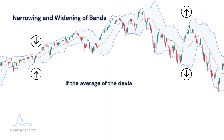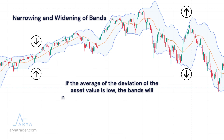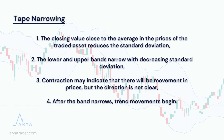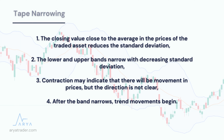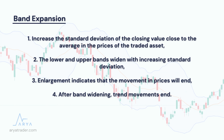Narrowing and widening of bands: The narrowing and widening of Bollinger Bands are shaped by the standard deviation. If the average deviation of the asset value is low, the bands will narrow, and if it is large, they will widen. The closing value close to the average in the prices of the traded asset reduces the standard deviation. The lower and upper bands narrow with decreasing standard deviation. Contraction may indicate that there will be a movement in prices, but the direction is not clear. After the band narrows, trend movements begin.